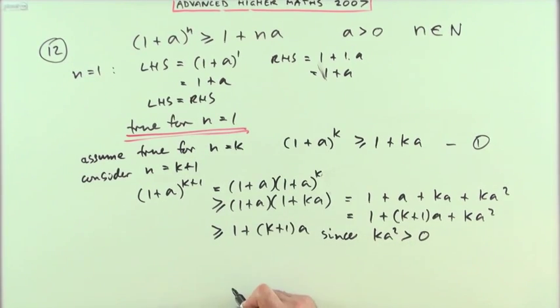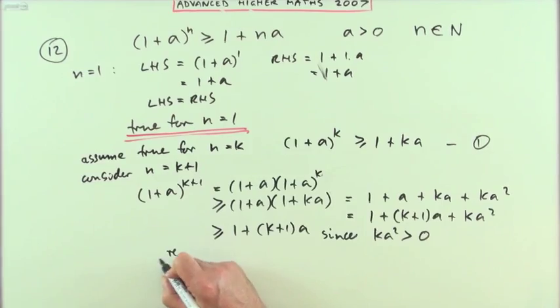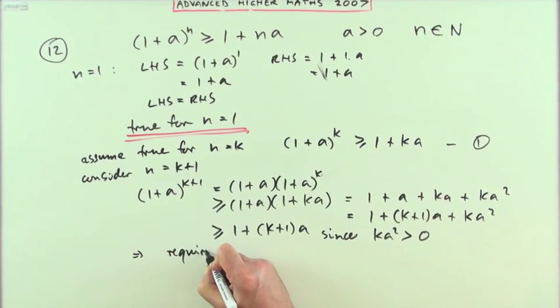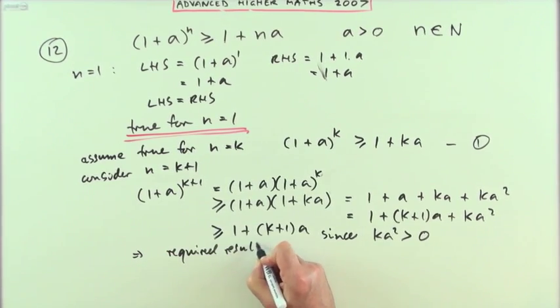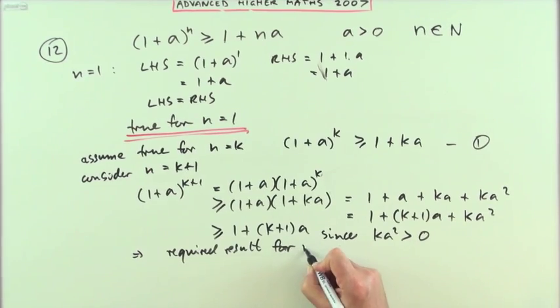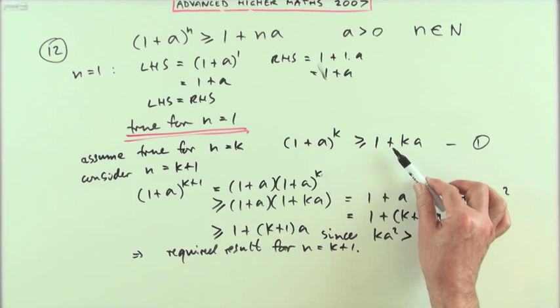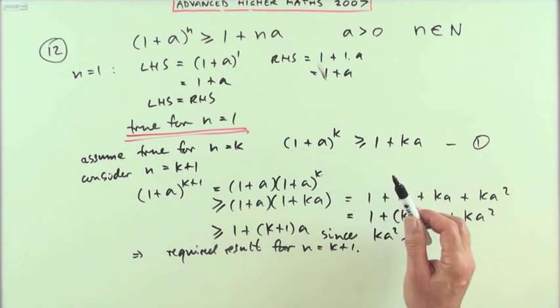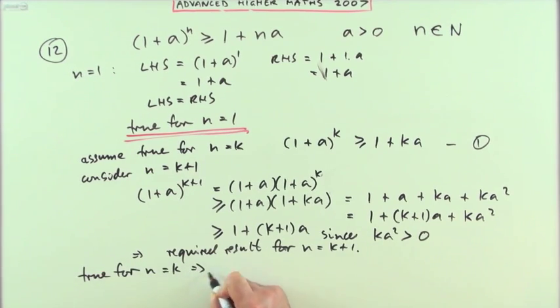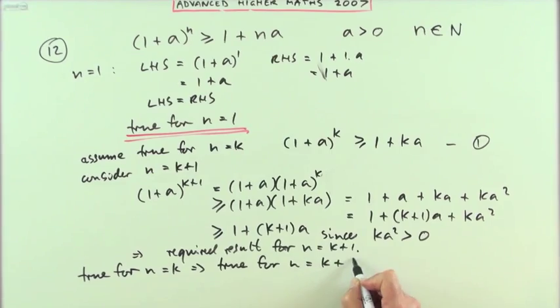Which means I've got the required result for n equals k+1. So if it were true for n equals k, it's turned out to be true at k+1. So you can now make that statement: true for n equals k meant it was in fact true for n equals k+1.